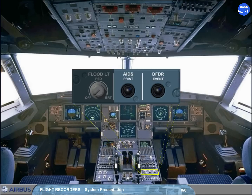On the pedestal, there is the AIDS print push button which can be used for an immediate printing of a specific report depending on the flight phase. But the crew may use the MCDU to select another report for immediate printing.